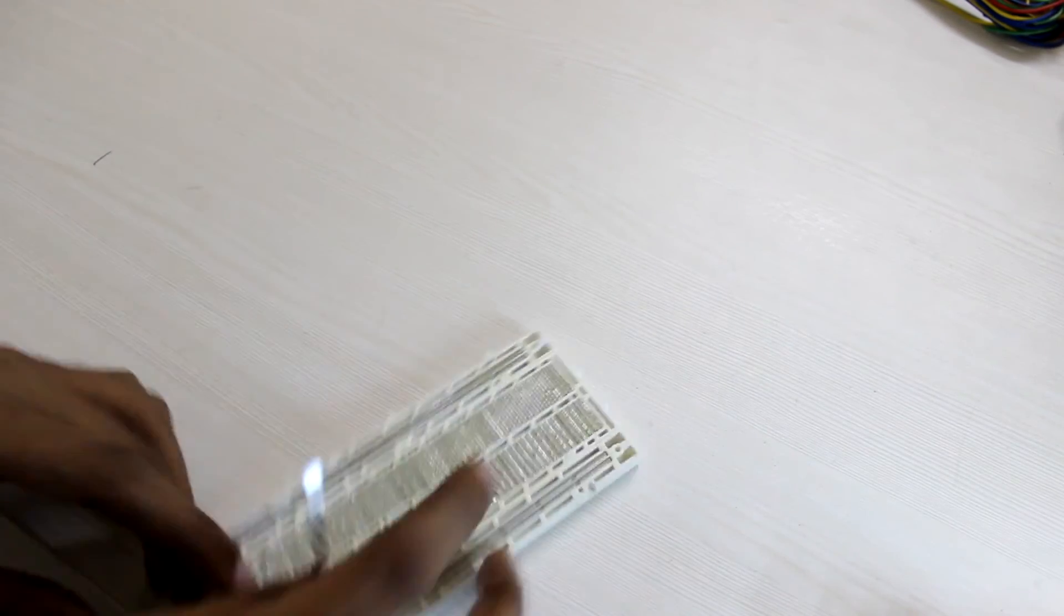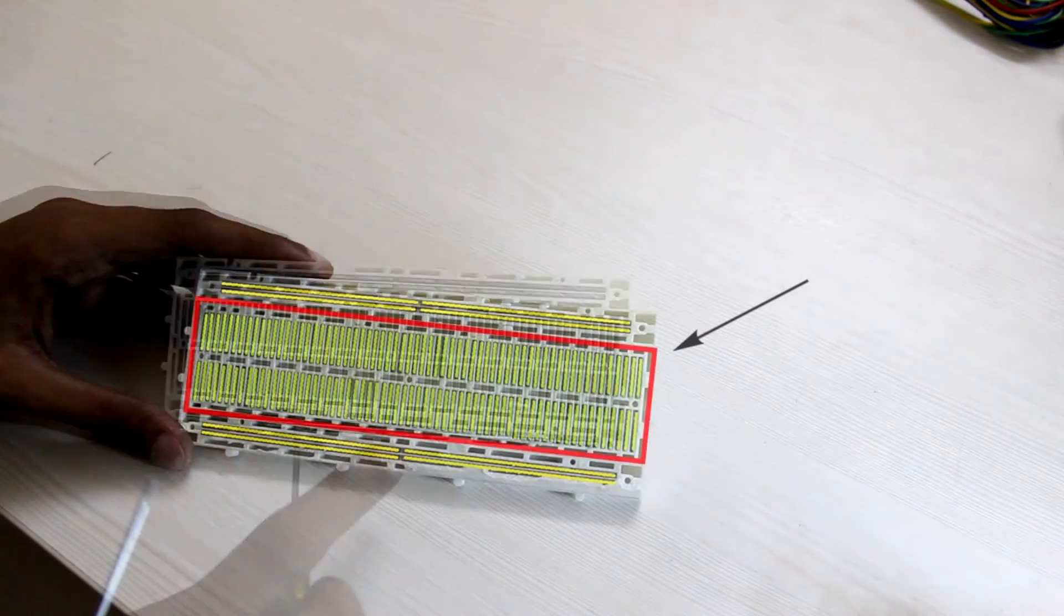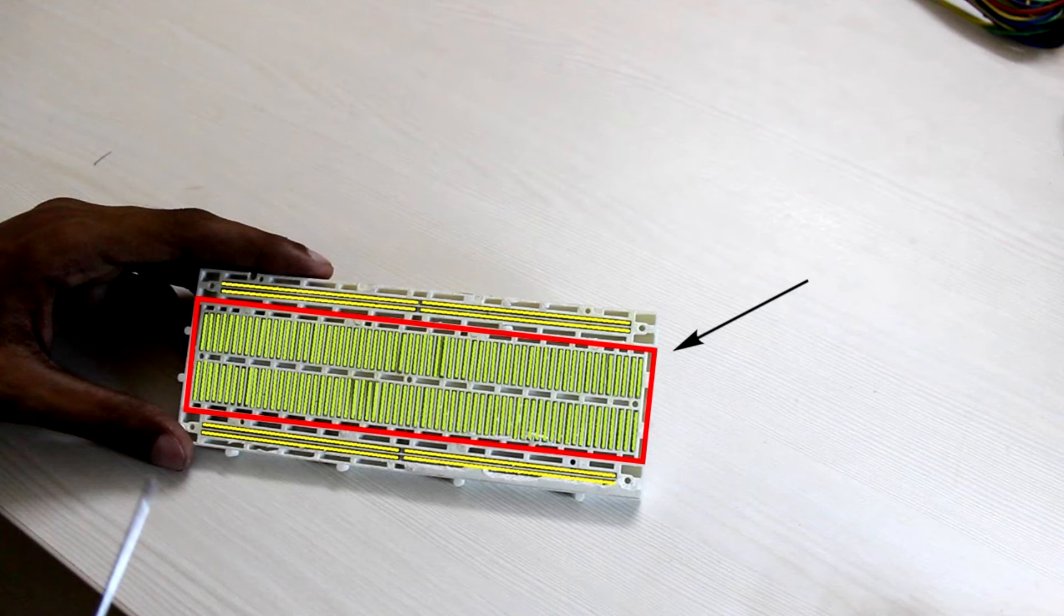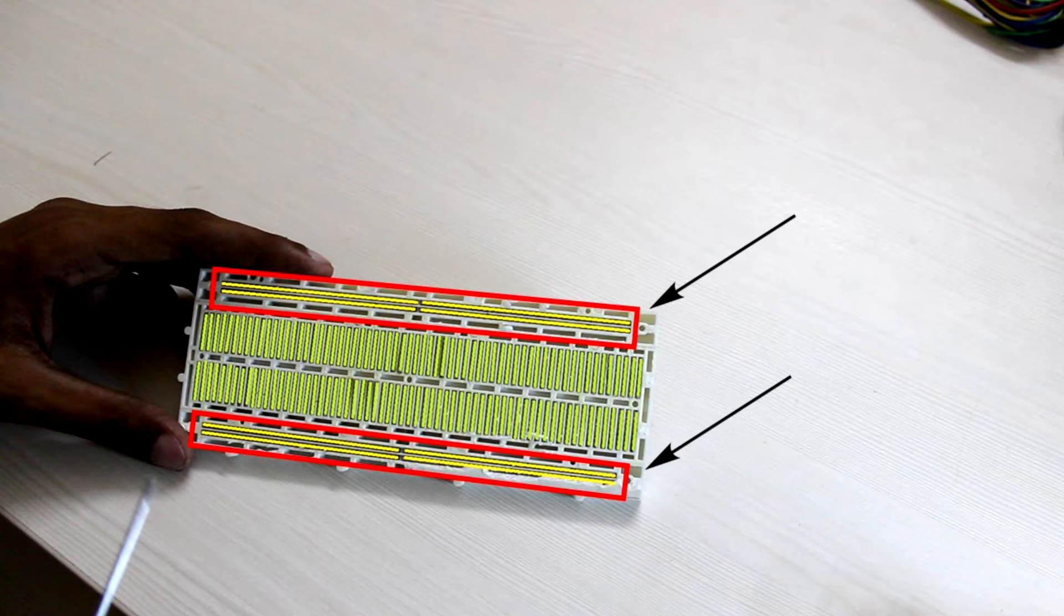So here you can see how the breadboard is connected internally. The green lines show the metal connection in the vertical direction and the yellow lines show the metal connection in the power grids on the top and bottom. Notice that for this breadboard the left and right sections of these regions are isolated. However for some breadboards this may not be the case.